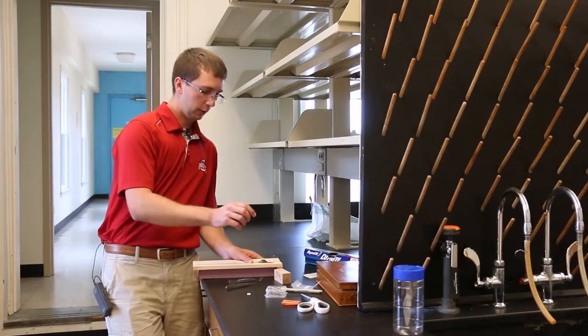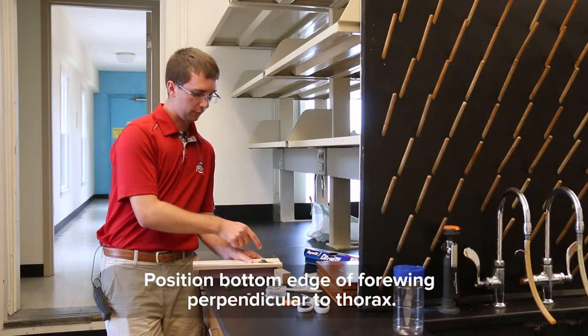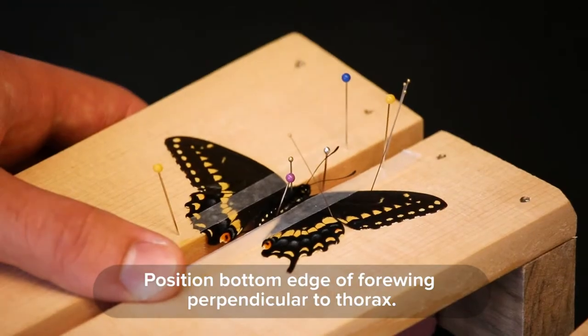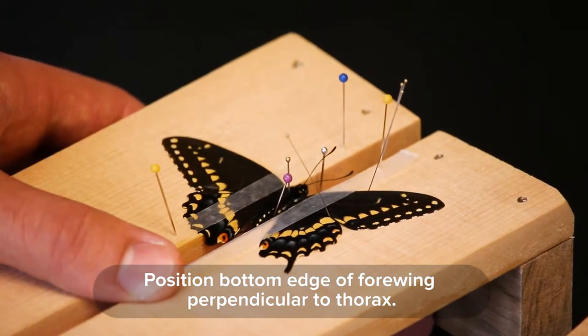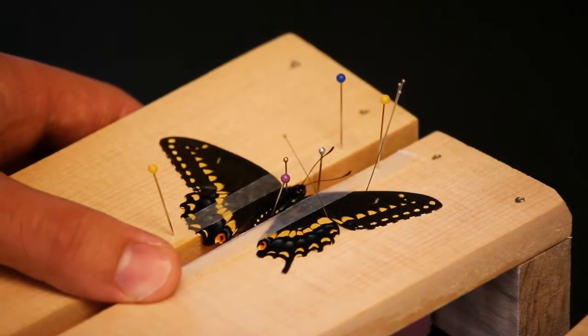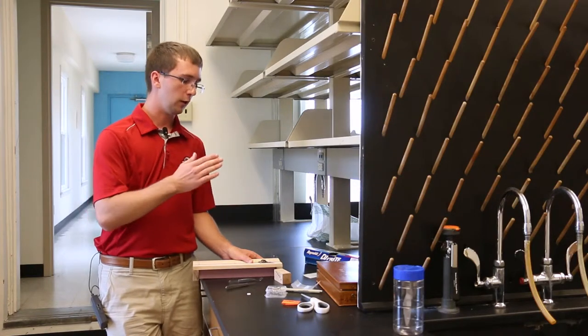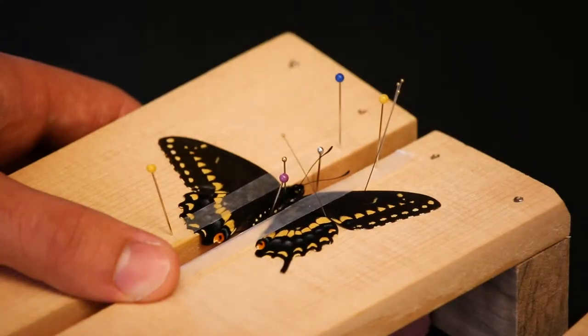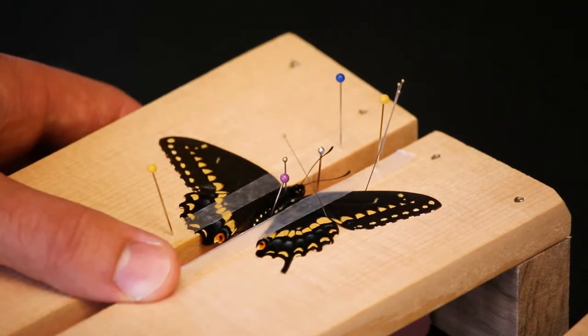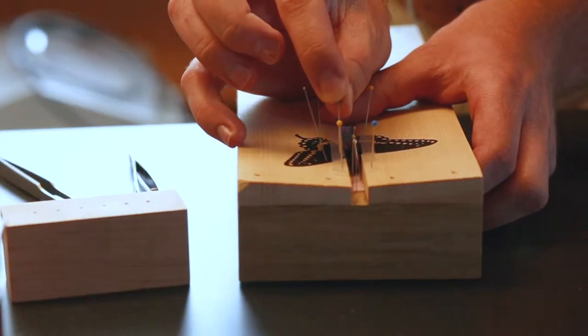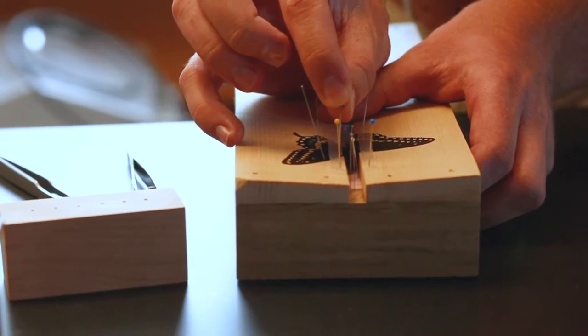When I spread my specimens I typically take the bottom edge of the forewing and make it perpendicular to the thorax, to where the thorax center line would be. That's a standard way of doing things. It gets the wing up high enough to where you can see all of the hind wing and all the forewing, and it looks good when you have a completed product. I'm going to pin the wax paper so they hold the wings in place.